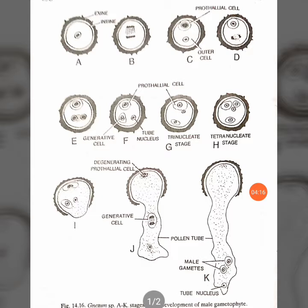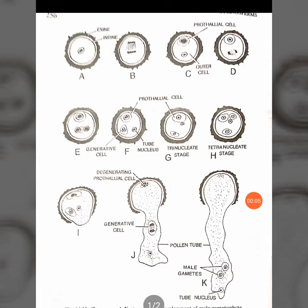At the final stage shown in figure H, the pollen grain is three-celled: the prothallial cell, the tube cell, and the generative cell. Development stops at this point and the microspore is ready for dispersal. They are dispersed by the formation of a longitudinal slit in the microsporangium, which splits open and releases the pollen grains into the air. Figures A to H thus show the development before pollination.